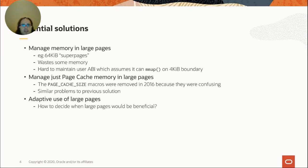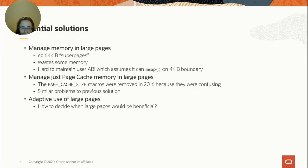Another approach attempted earlier was to manage just page cache memory in large pages. This also has difficulties similar to the previous approach, and it confuses people because they're never quite sure when they're supposed to be using page size versus page cache size. Since the two were not actually different for very long, nobody noticed when people got it wrong. We had a flurry of patches trying to fix this, and in the end in 2016, we just ripped out the page cache size macros entirely.